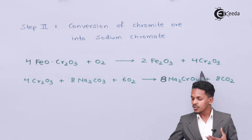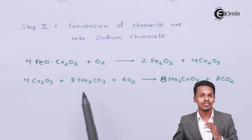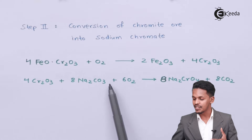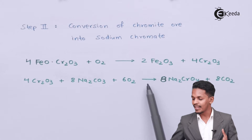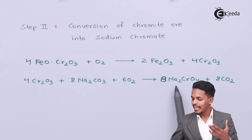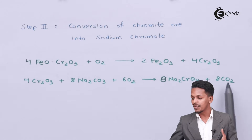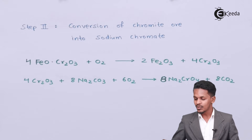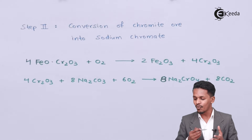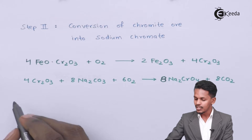This 4 moles of Cr₂O₃ is then treated with Na₂CO₃ (sodium carbonate) along with 6 moles of oxygen to obtain sodium chromate, Na₂CrO₄, plus 8 moles of CO₂. This is a two-step reaction, and we need to consider the overall reaction.